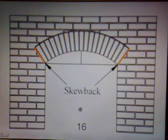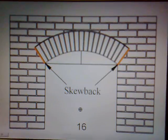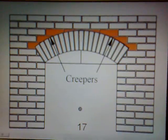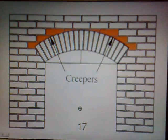Sixteen: the skew back — this is the sloping surface against which the springers of some arches rest. Seventeen: the creepers — these are the cut bricks around the extradose of the arch. And that's the seventeen arch terms and their definitions.